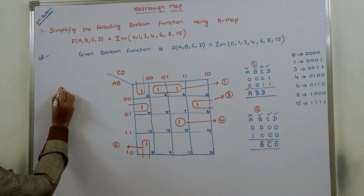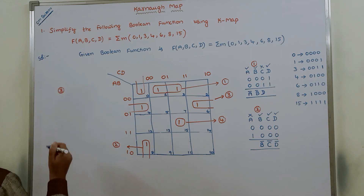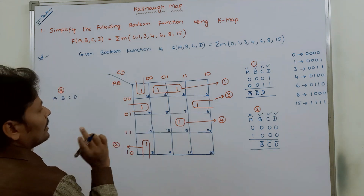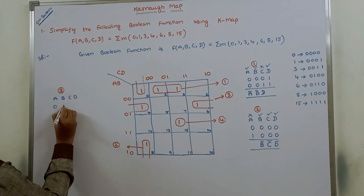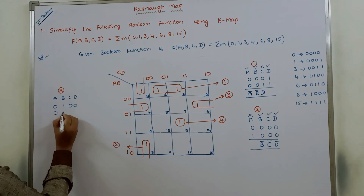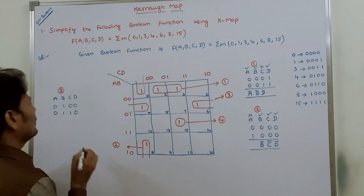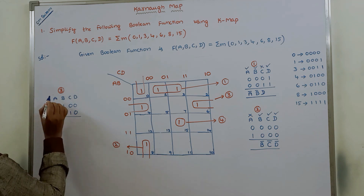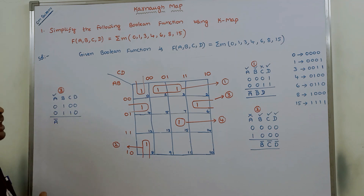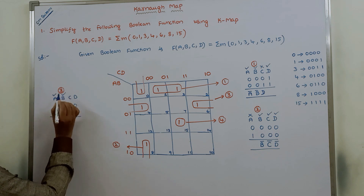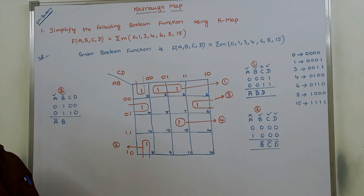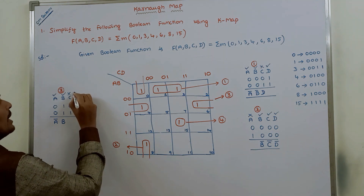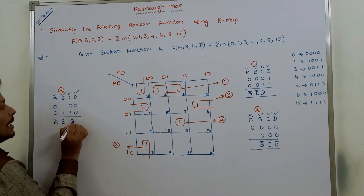For the third pair: A column contains only zeros — include Ā; B column contains only ones — include B; C column contains a combination of zeros and ones — ignore it; D column contains only zeros — include D̄. So the expression for the third pair is Ā·B·D̄.